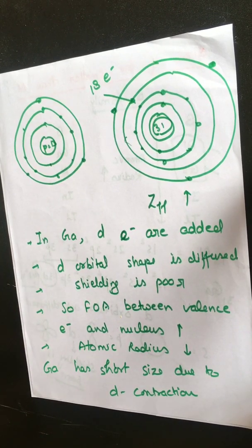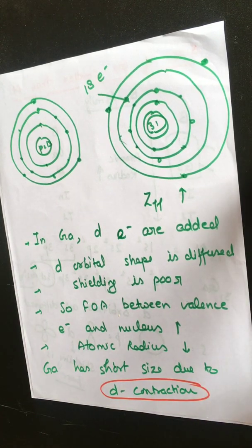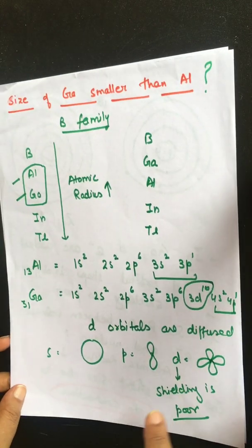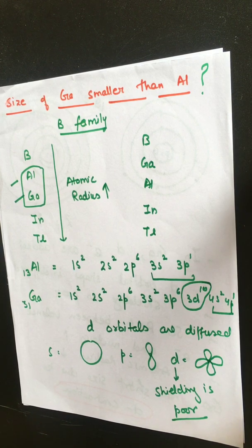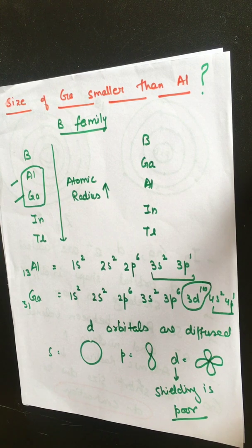This phenomenon is known as d-contraction. What you have to remember: in gallium, 3d electrons are filled, and d-orbitals are diffused. Because of their diffused nature, their shielding is poor, and because of poor shielding, the force of attraction between the nucleus and valence electrons increases, and size decreases. That is why the size of gallium is smaller than aluminium. In the next video we will talk about the next topic — till then, goodbye.